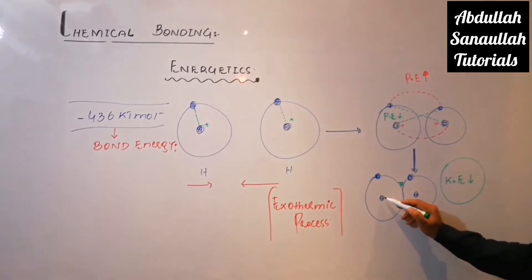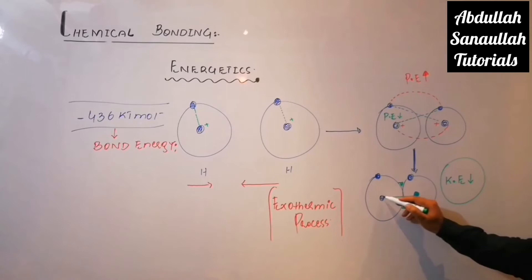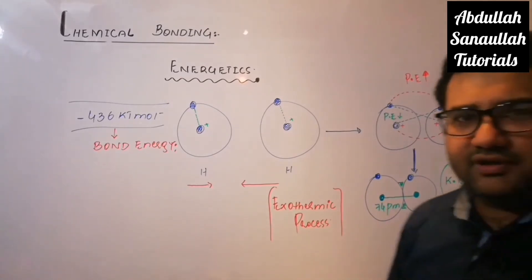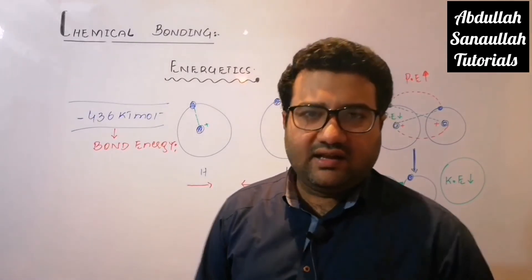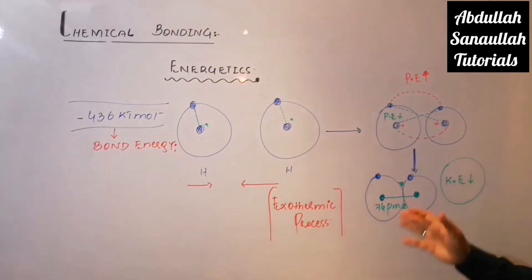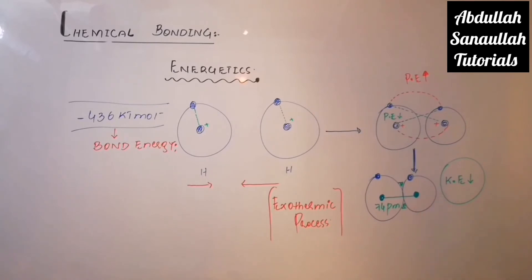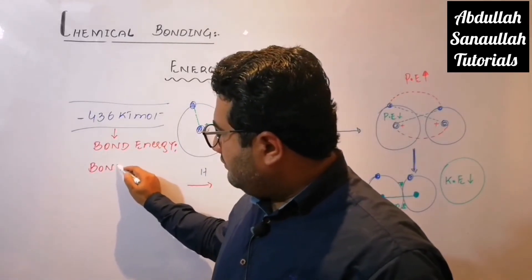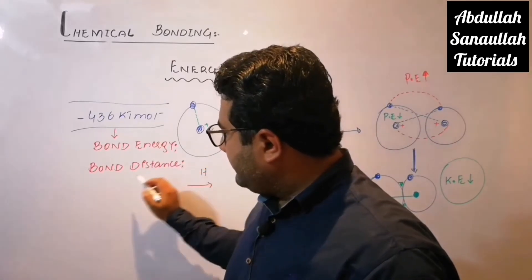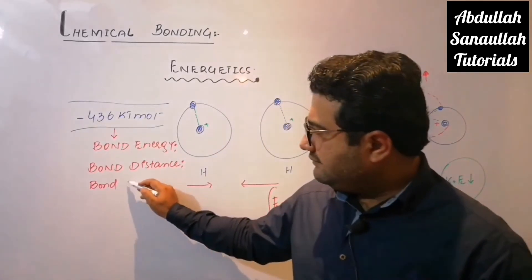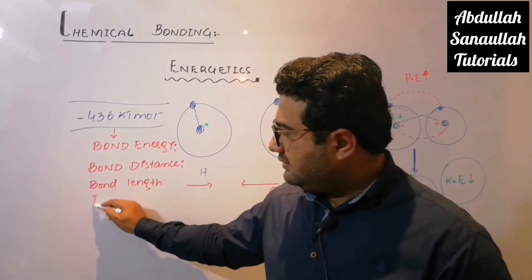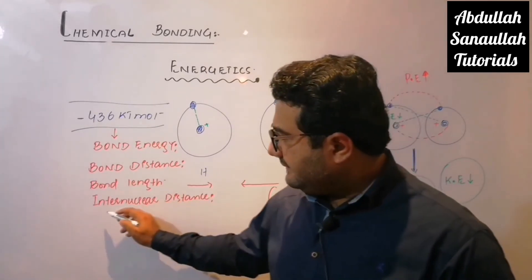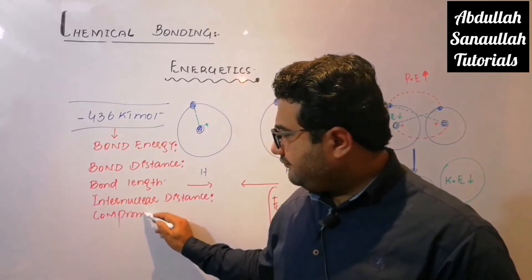The distance between the hydrogen atoms when they are bonded — specifically the distance between their nuclei — is almost 74 picometers. About 37 picometers is the radius of a hydrogen atom, so when two hydrogen atoms are combined, their radii are added to give 74 picometers. This distance between the nuclei of bonded atoms is called the bond distance, also known as bond length, inter-nuclear distance, or compromise distance.